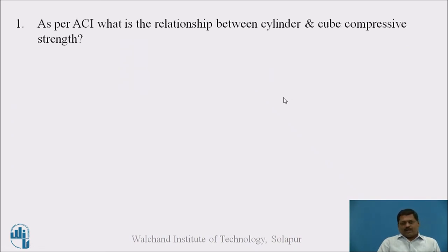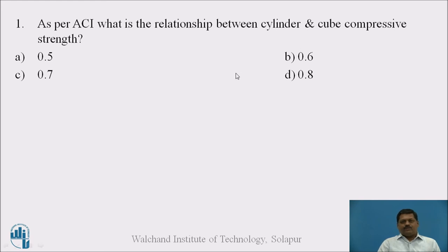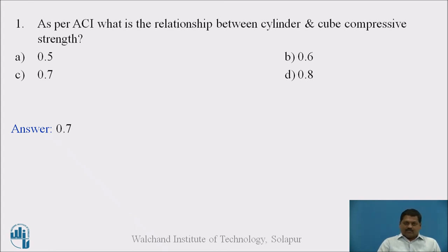A question for all of you: as per ACI, what is the relationship between cylinder and cube compressive strength? The options are A) 0.5, B) 0.6, C) 0.7, D) 0.8. Please write down the answer and pause the video. The answer is 0.7 — the relationship between cylinder strength and cube strength is 0.7.